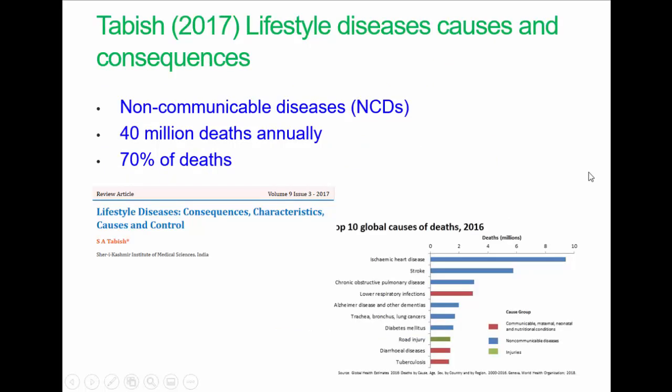Okay, non-communicable diseases. These are diseases that cannot be communicated from one person to another. However, they kill around 40 million people each year, and account for about 70% of deaths globally. NCDs are chronic in nature — they have long latency periods and may cause long-term problems. Latency period means the time before the symptoms of the disease manifest themselves.